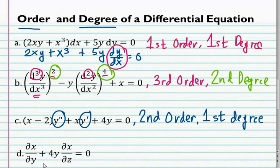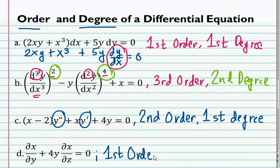Lastly, we have the partial derivative of x with respect to y plus 4y multiplied by the partial derivative of x with respect to z. Both partial derivatives are in the first order and also first degree. That is how you will classify a differential equation by its order and degree.